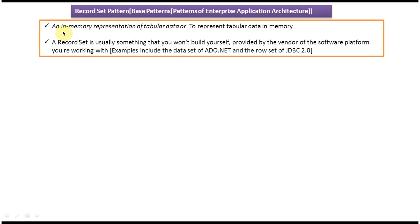A Record Set is an in-memory representation of tabular data — that is, it represents tabular data in memory. We will see one example so that you will understand this clearly.